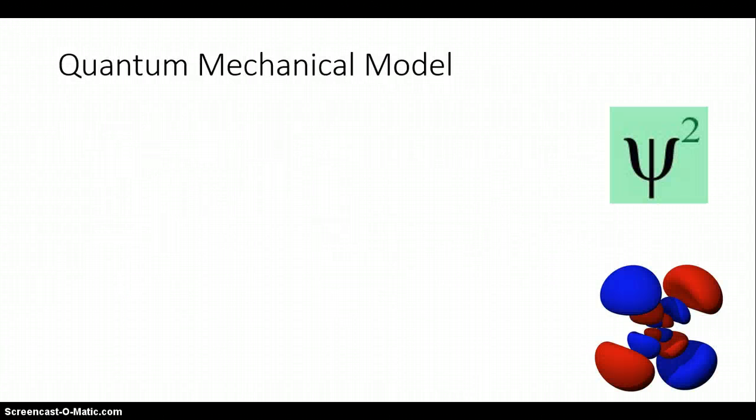Moving on, quantum mechanical model. This is the actual modern model of the atom that we accept today. We are no longer looking at rings of electrons around the nucleus. In this case, this is the quantum mechanical model. You should recognize this name, Erwin Schrödinger, for various reasons. The main contribution in this context is the wave functions.